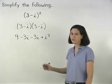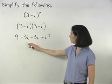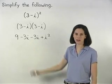So we have 9 minus 3i minus 3i plus i squared.